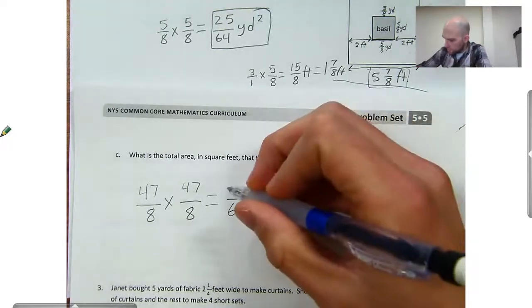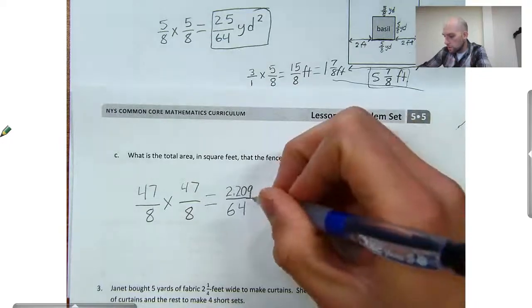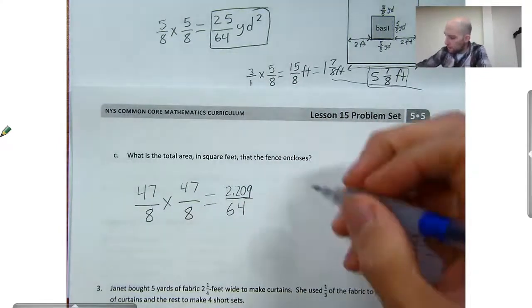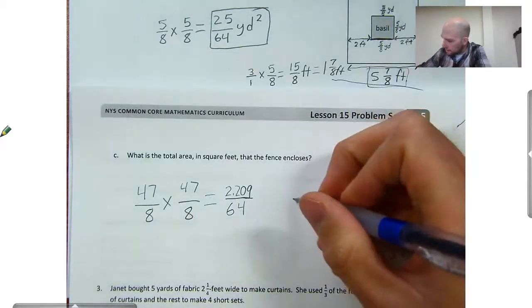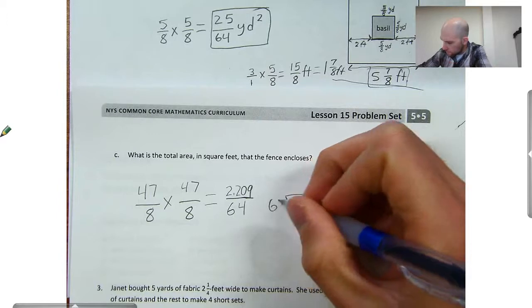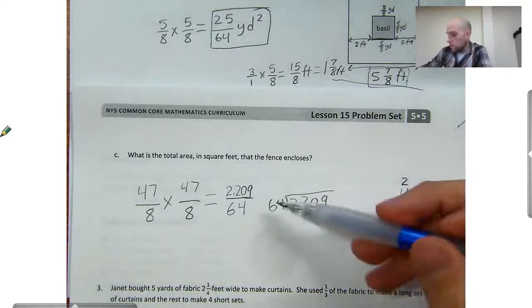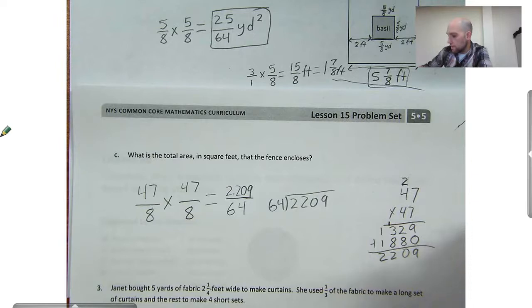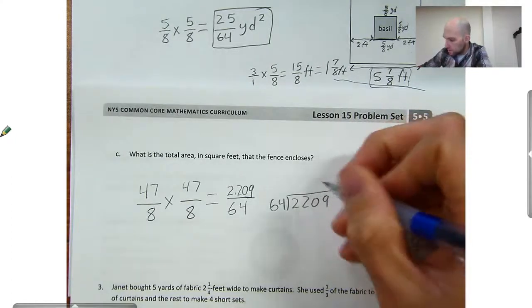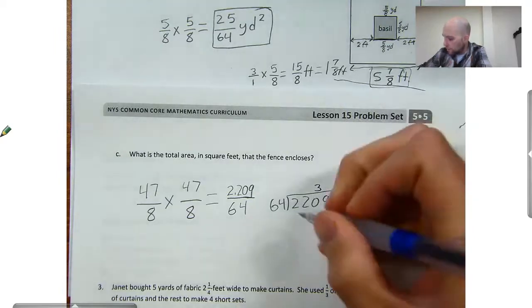And I'll get 2,209 sixty-fourths. And I will have to divide that. Sixty-four goes into 220. Well, 64 times two would be 128. If we doubled that, that would be more than 220. So it looks like it'll go in three times. Sixty-four times three is 180. Four times three is 12. So I'll have 192.